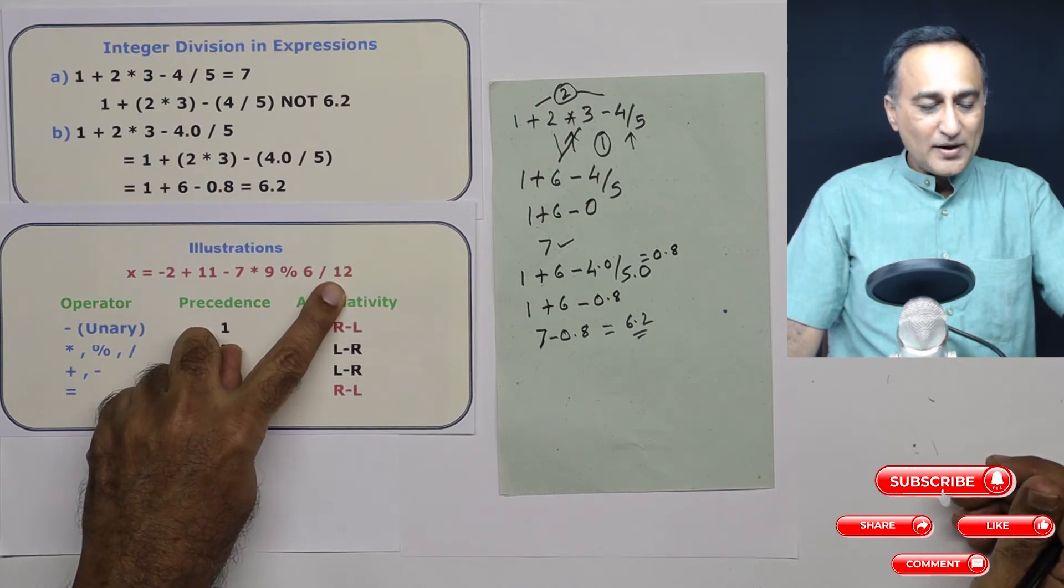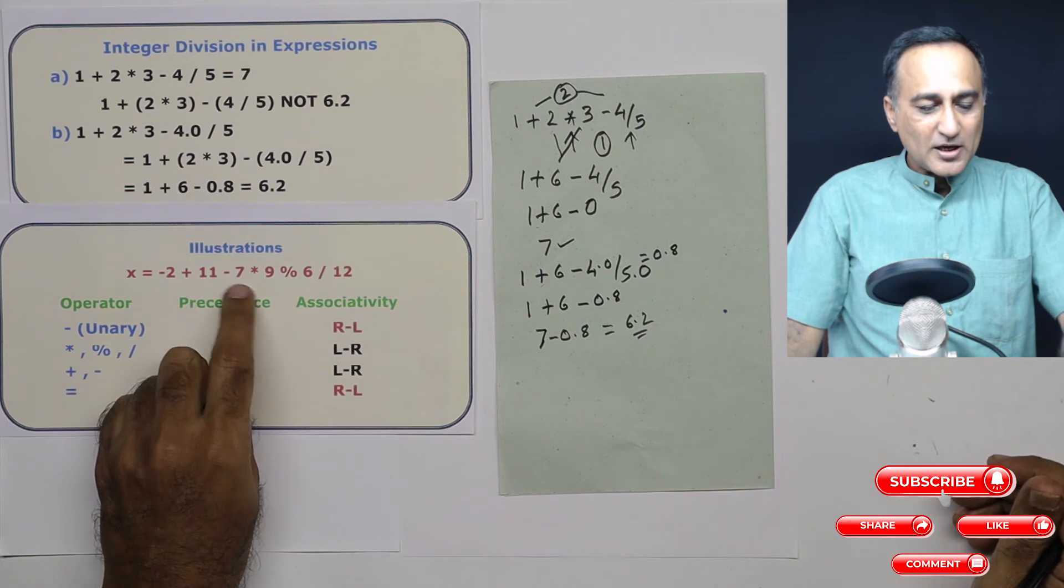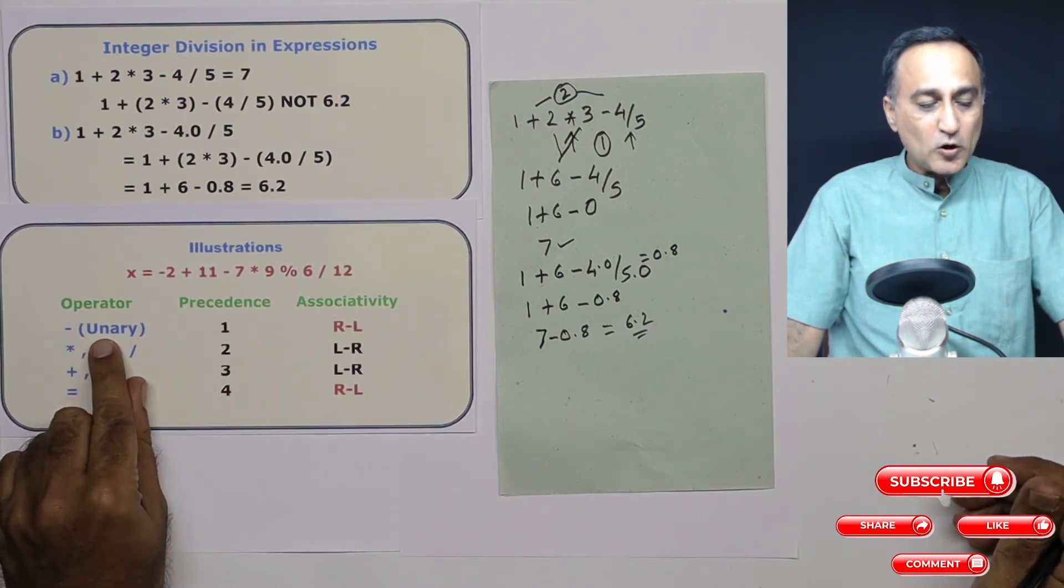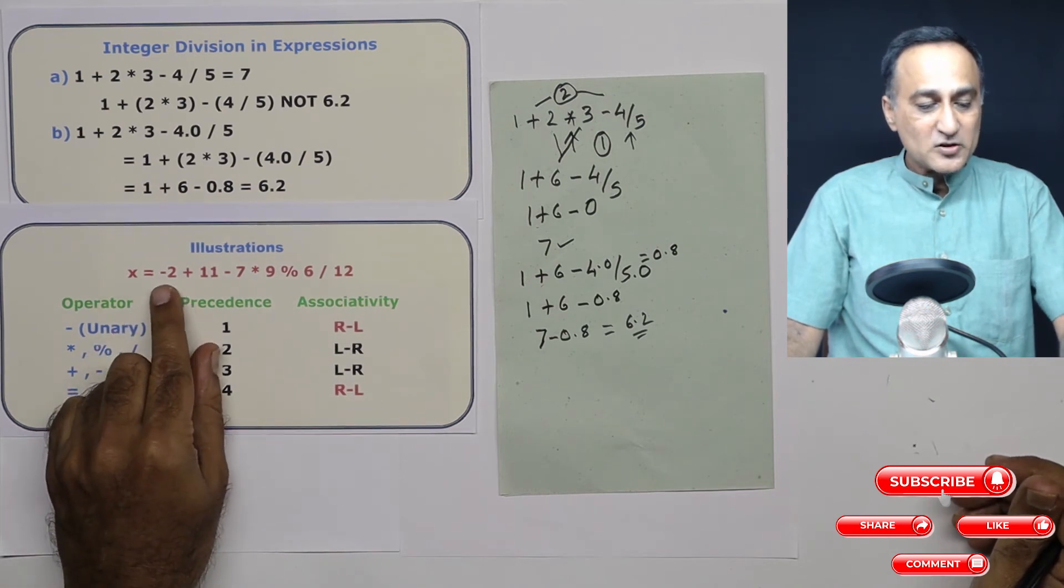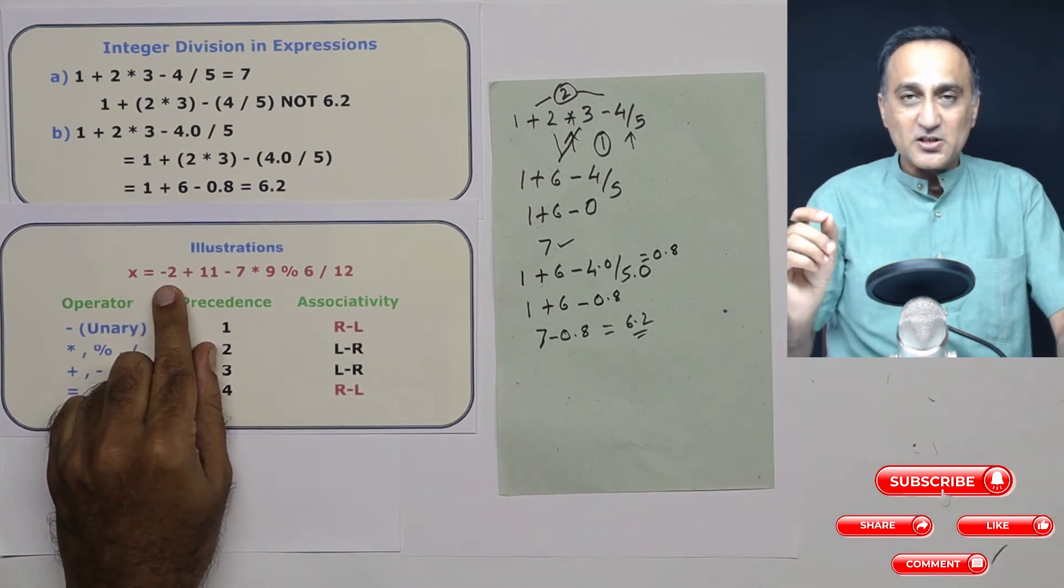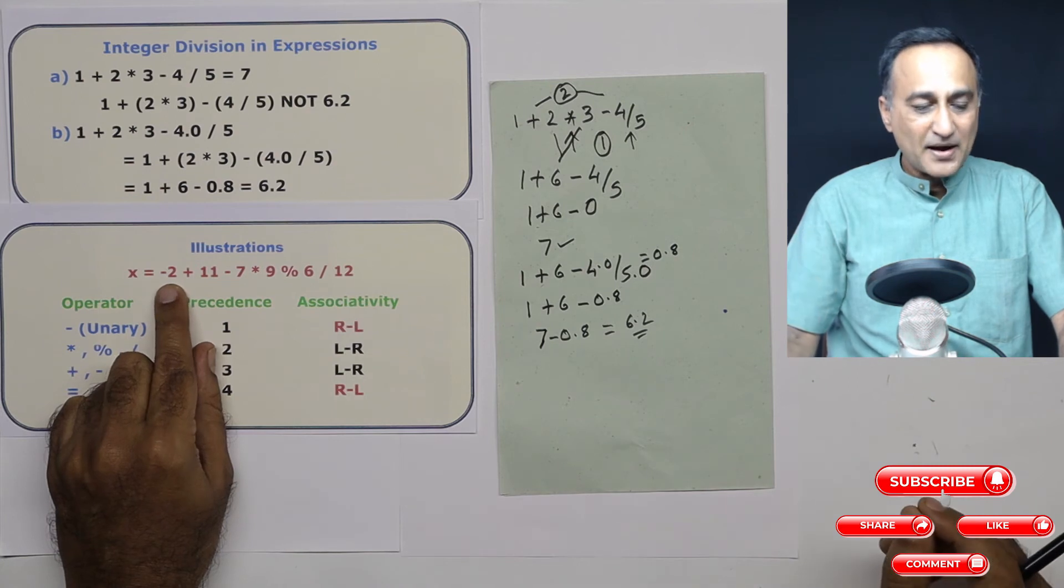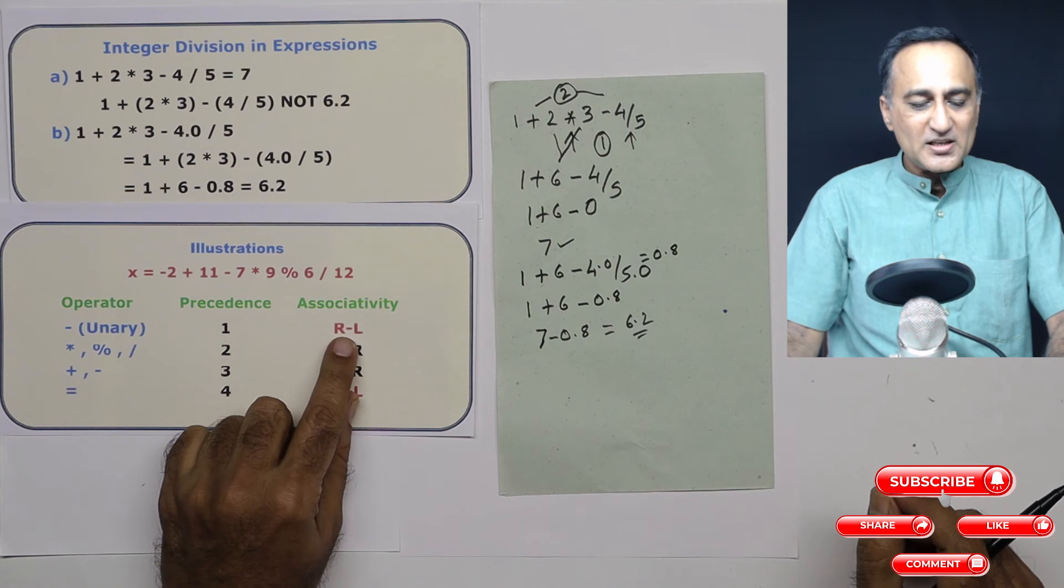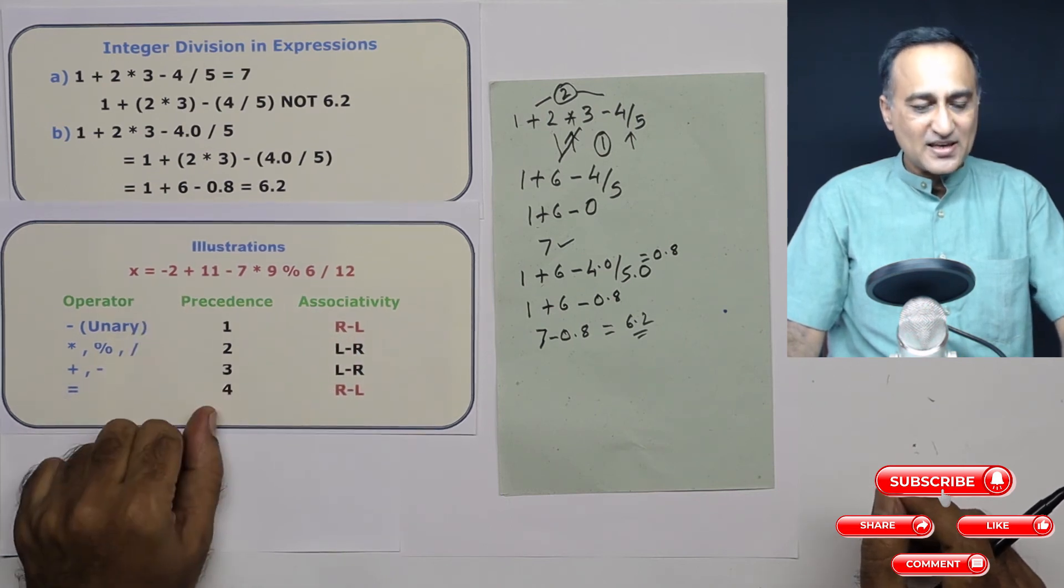So here, if you look at this expression, the highest priority is always going to be with the unary operator. So what is the unary operator? Minus. So first thing this expression gets evaluated is this 2 is going to become minus 2. And its associativity is from right to left, doesn't really make a difference in this case.